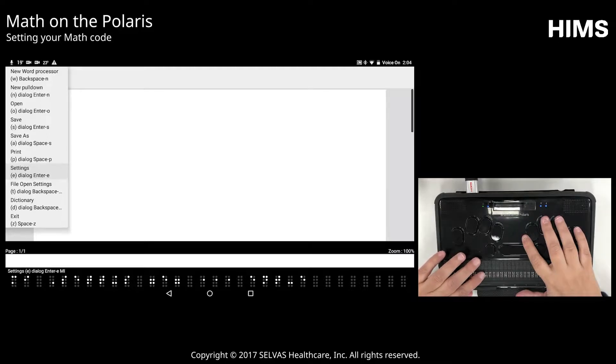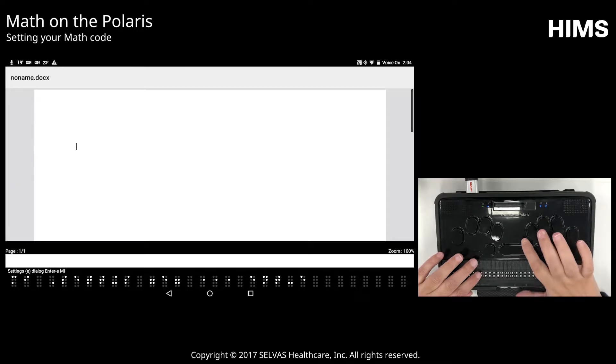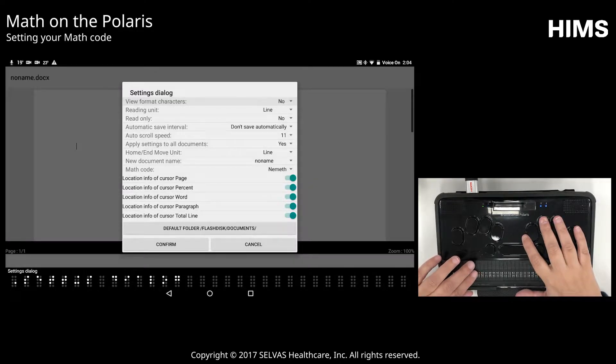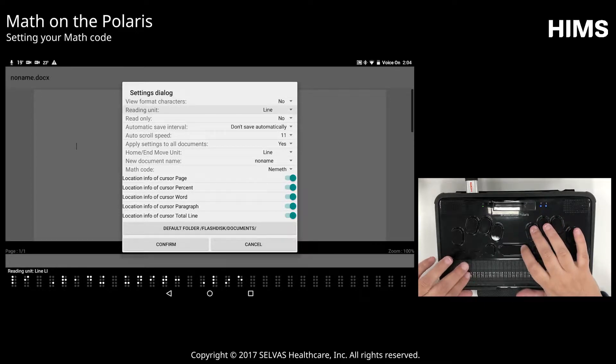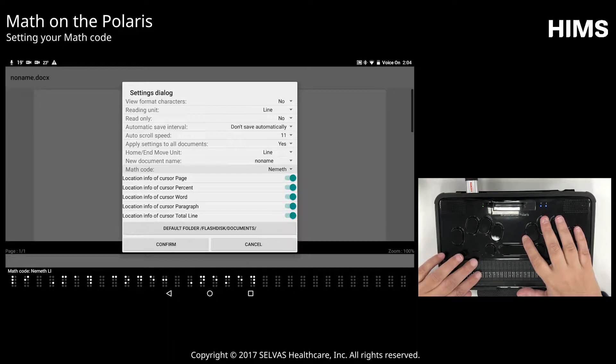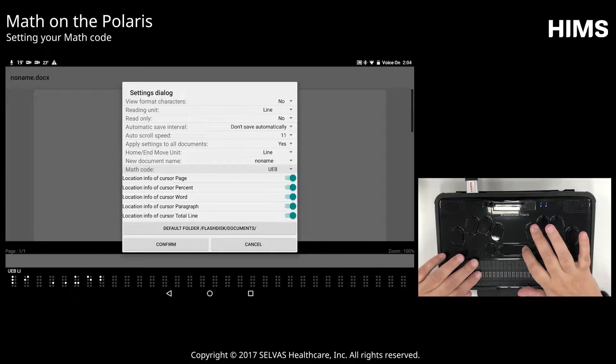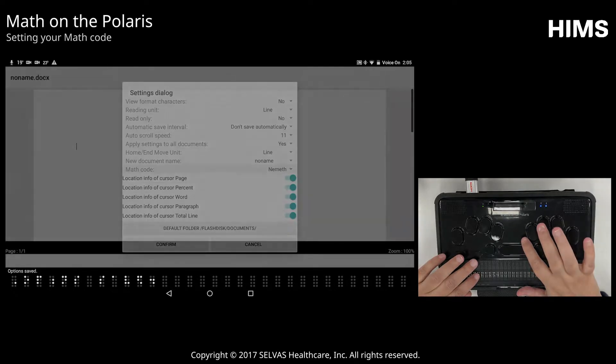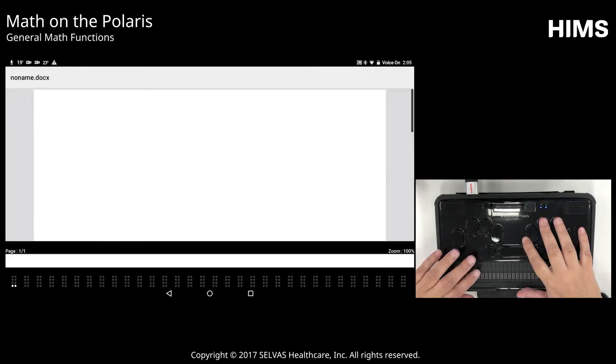I could have also just pressed E as it announced. So I'll press enter here to open the settings dialog. Now I have a bunch of settings, and I'm going to press space 4 to go through the settings list until I find Math code. I can press space here to change it to UEB. I actually do want to use Nimeth, so I'm going to press space again to change it back to Nimeth, and I'll press enter to save. So now I'm ready to write in my document.